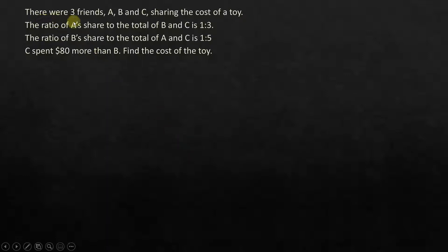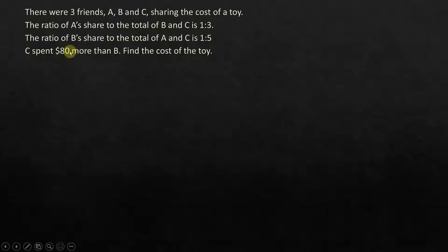The question is: there were three friends A, B, and C sharing the cost of a toy. The ratio of A's share to the total of B and C is 1:3. The ratio of B's share to the total of A and C is 1:5. C spent $80 more than B. Find the cost of the toy.